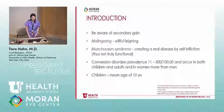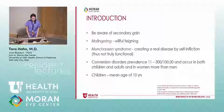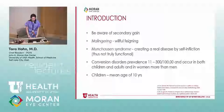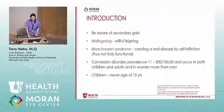Malingering is willful feigning, which is sometimes different than functional vision loss or a conversion disorder. Munchausen syndrome is creating a real disease by self-infliction — that's not truly functional. For example, a patient using laser pointers pointed at her macula would be an example of Munchausen syndrome. Conversion disorder prevalence is 11 to 300 per 100,000. They occur in both children and adults, but are more common in women. The mean age of children with conversion disorders is about 10 years old.